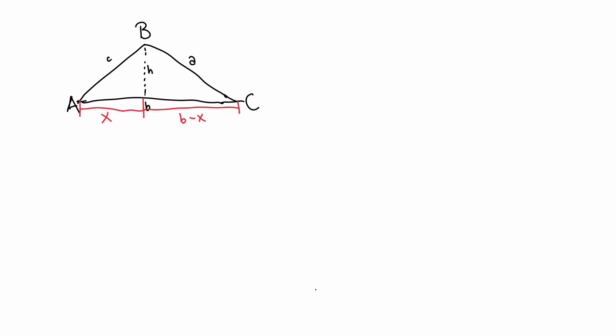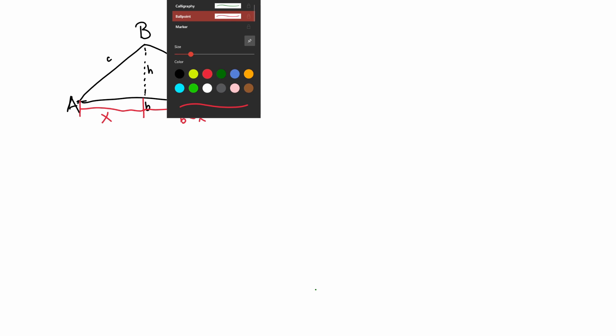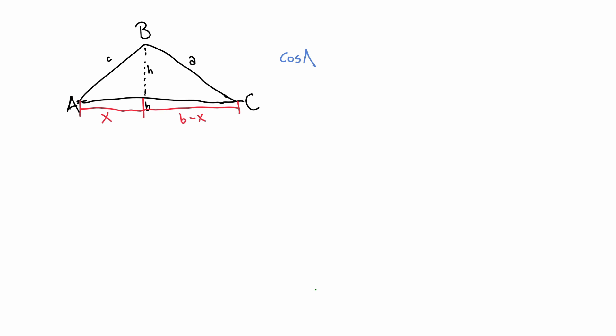I'm going to start with the cosine of angle A over there. And the definition of cosine is adjacent leg over hypotenuse. So in this case, it's going to be x is the adjacent leg to angle A. There's our angle A. And then c is the hypotenuse of that little right triangle. So it's going to be x over little c. And if I want to figure out what x is here, I'm going to multiply both sides by c. So x, our little unknown, is going to be c cosine A. And I'm going to put a little dot there to remind myself that it's multiplication.